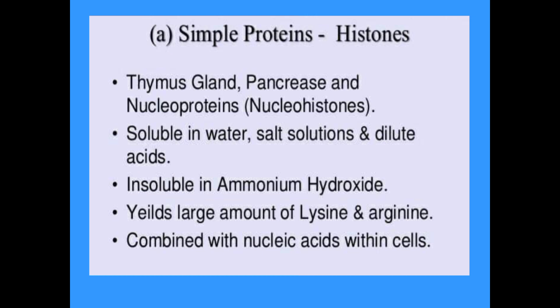Simple proteins may also be histones, found in thymus gland, pancreas, and nucleoproteins — called nucleohistones. They are soluble in water, salt solution, and dilute acids, but insoluble in ammonium hydroxide. They yield large amounts of lysine and arginine and may be combined with nucleic acids within cells.